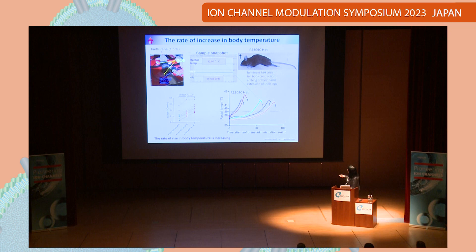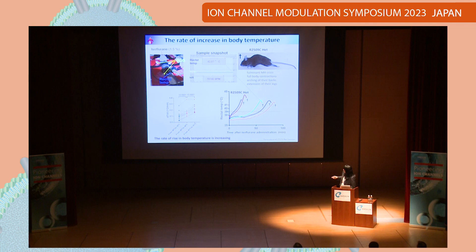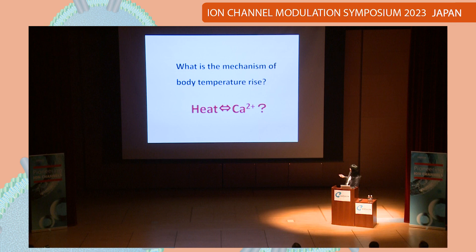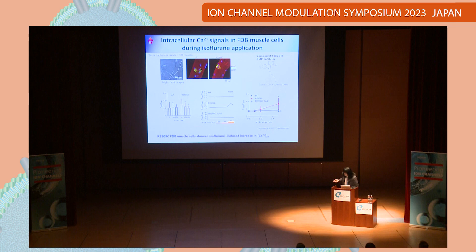We focused again on the temperature trace. Above 39 degrees, the rate of temperature rise increases. We analyzed from 38 to 39 degrees, 39 to 40 degrees, and 40 to 41 degrees — the rate of rise of body temperature is increasing. We asked: what is the mechanism of this accelerating body temperature rise? Is there a correlation between heat and calcium? We studied this in vitro using enzymatically isolated FDB single skeletal muscle cells.